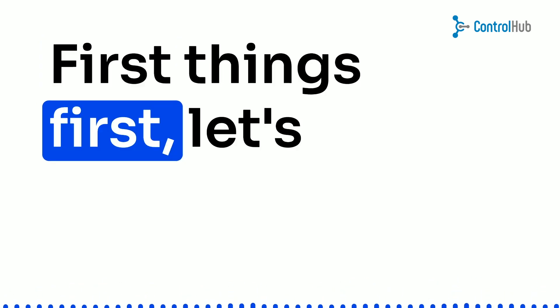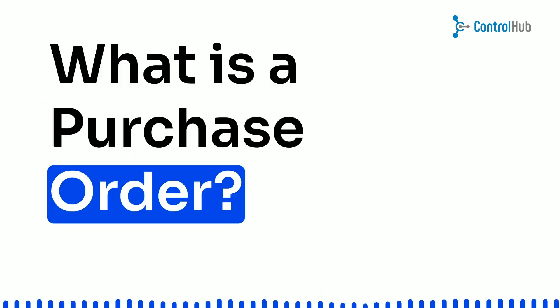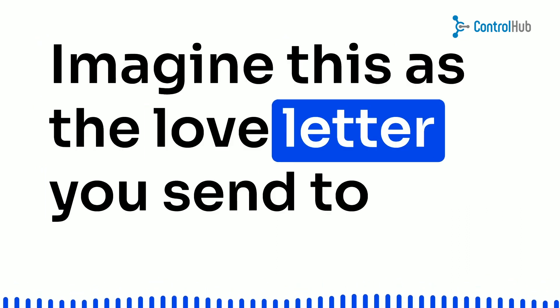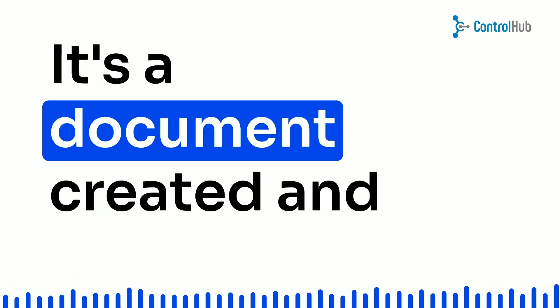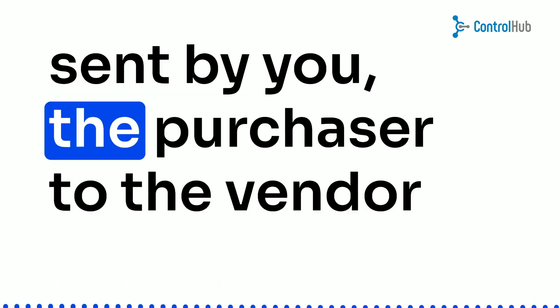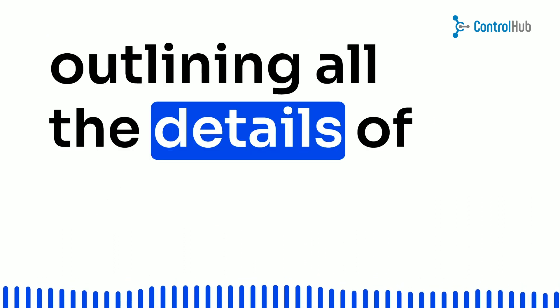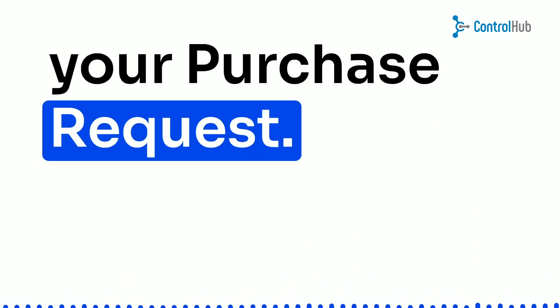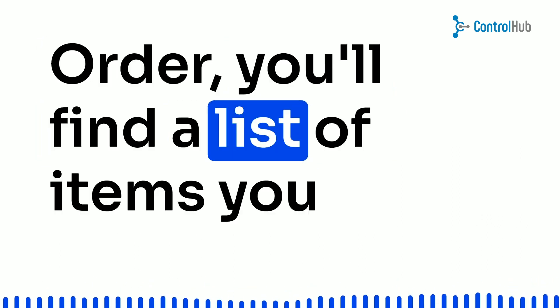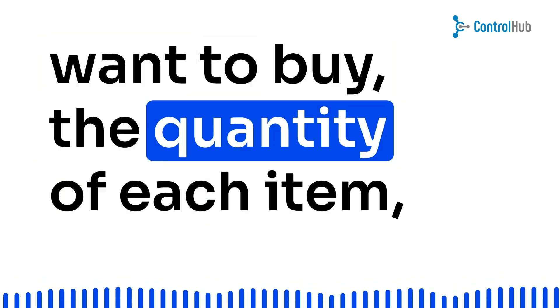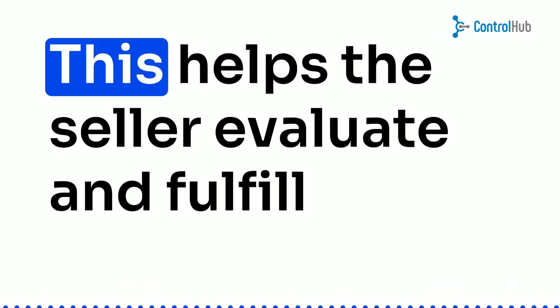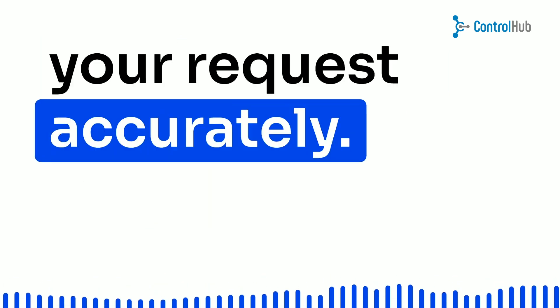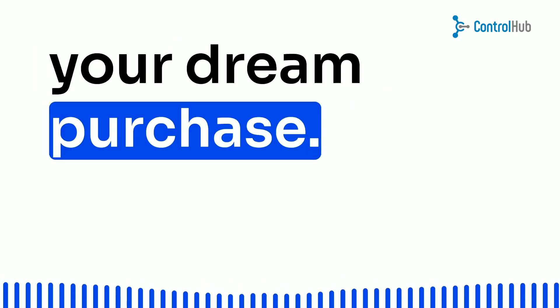First things first, let's tackle the question: what is a purchase order? Imagine this as the love letter you send to your favorite vendor when you want to make a purchase. It's a document created and sent by you, the purchaser, to the vendor, outlining all the details of your purchase request — it's like a shopping list on steroids. Inside you'll find a list of items you want to buy, the quantity of each item, the agreed price for each item, and other relevant information. This helps the seller evaluate and fulfill your request accurately.